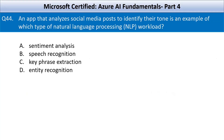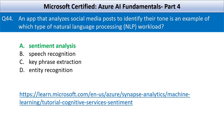Next question: an app that analyzes social media posts to identify their tone is an example of which type of natural language processing workload? Your options are sentiment analysis, speech recognition, key phrase extraction, and entity recognition. Sentiment analysis is the process of determining the emotional tone or opinion expressed in a piece of text. It classifies text as positive, neutral, or negative, which makes it ideal for analyzing social media posts, product reviews, or customer feedback to gauge public sentiment.